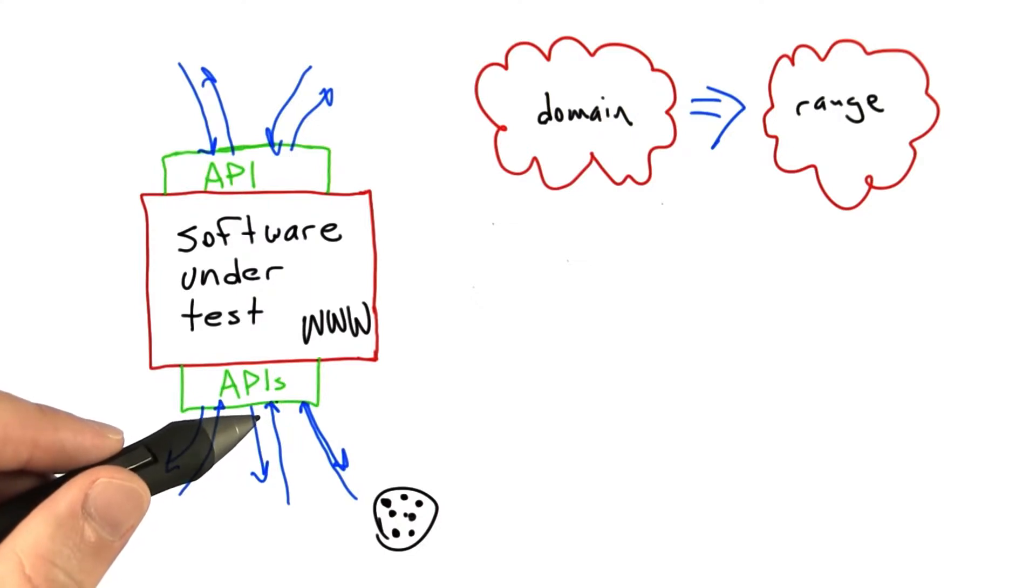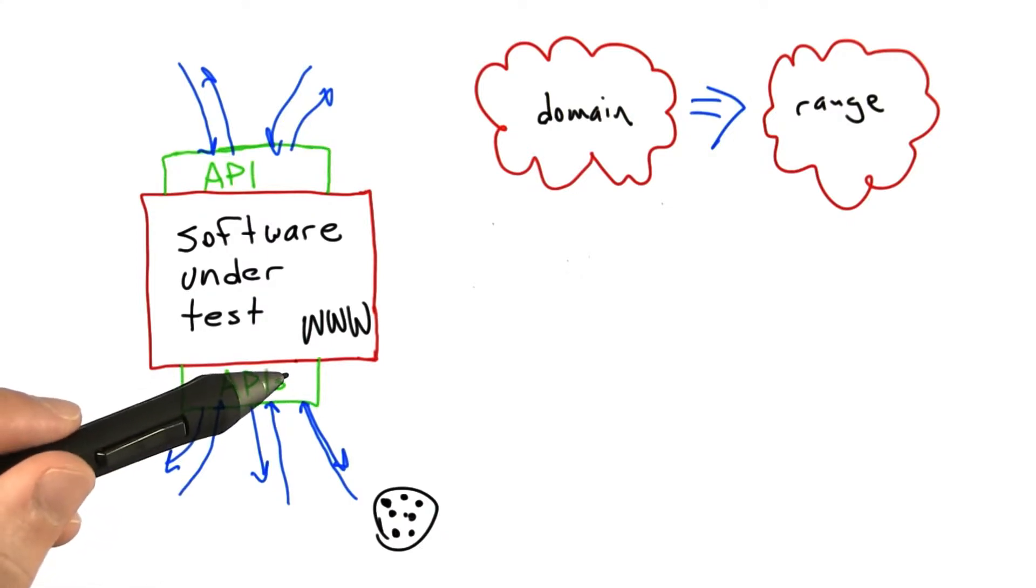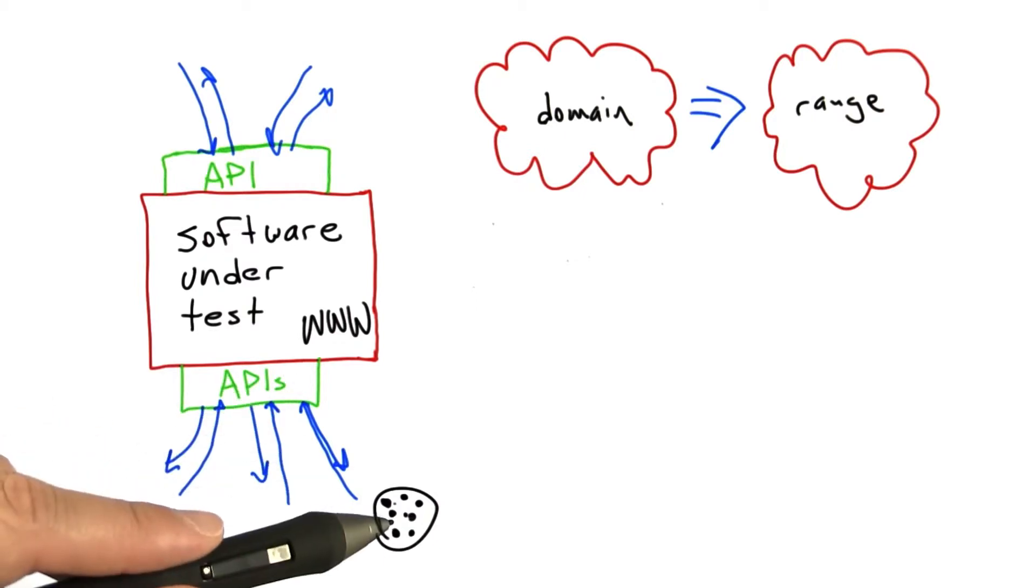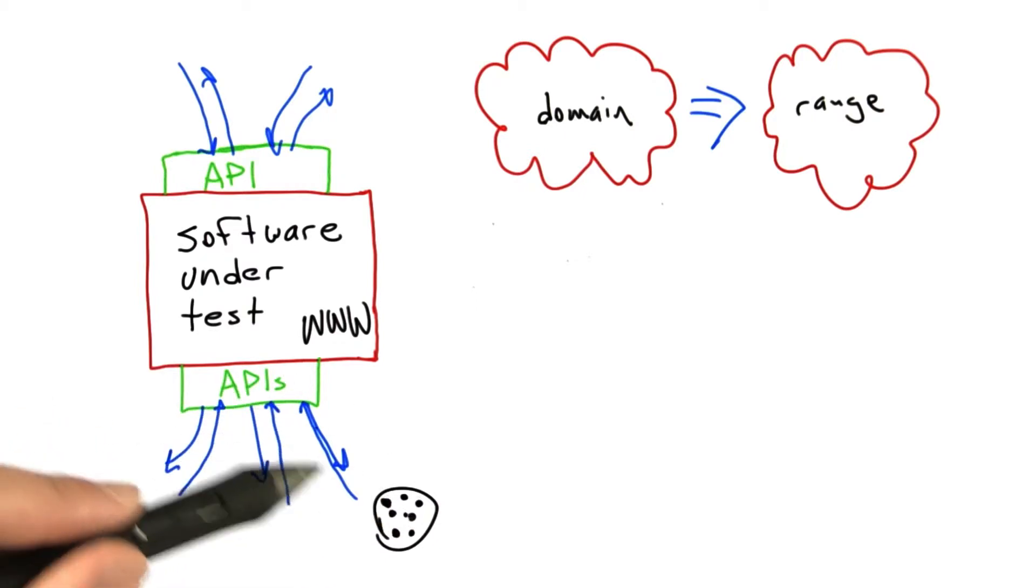So the problem is that we have this fairly awkward problem where we don't actually control how the operating system responds to calls that we make. And what I mean by that is, the awkward thing here is that we don't actually have direct control over how the operating system responds to calls that we make. So we can't easily just make storage of a cookie file fail.